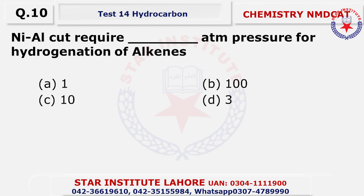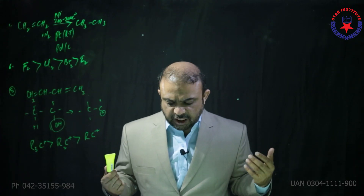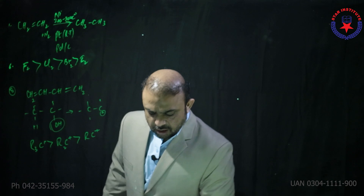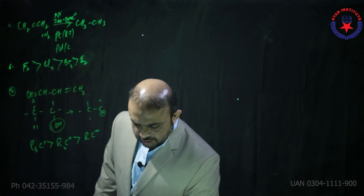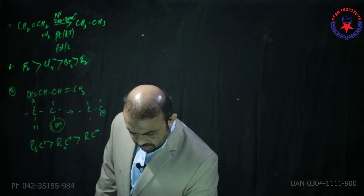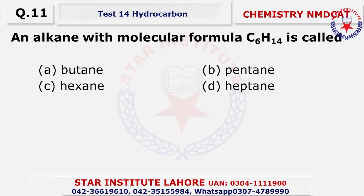Question number 10: Nickel-aluminum cut is taken at 380m pressure and 100 degree Celsius temperature. This is a Raney nickel condition. Question 11: alkanes with a molecule of formula C6H14 — this is a cramming or dash-type question.